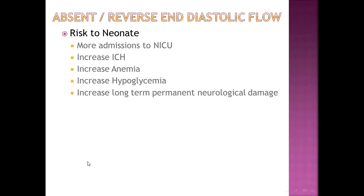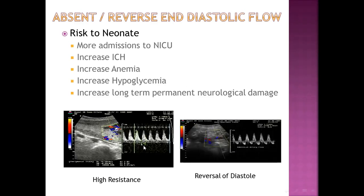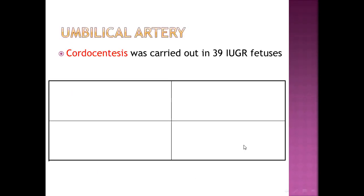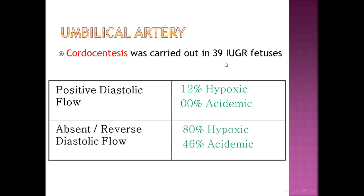Absent or reversed diastolic flow is the most important finding in fetal Doppler of the umbilical artery. It carries risk of increased NICU admission, increased intraventricular hemorrhage, increased anemia, increased hypoglycemia, and increased long-term permanent neurological damage. High resistance with preserved diastolic flow is concerning, but reversed diastolic flow is a bad ominous sign. In 39 IUGR fetuses studied: with positive diastolic flow only 12% were hypoxic and there was no acidosis; but with absent or reversed diastolic flow about 80% were hypoxic and nearly half were acidemic.